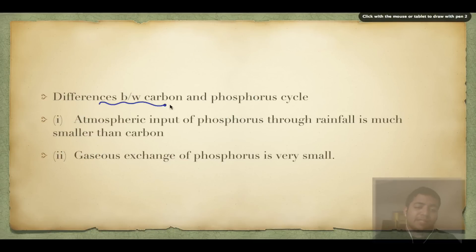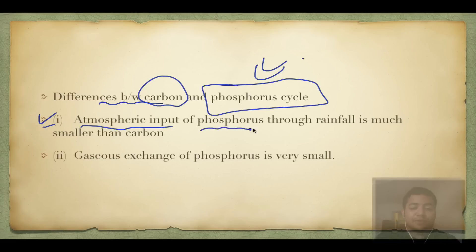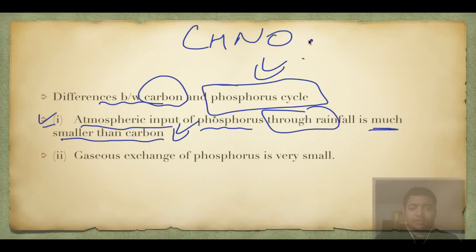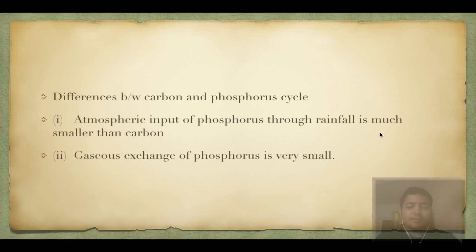The key difference between the carbon cycle and phosphorus cycle: the atmospheric input of phosphorus through rainfall is much smaller than carbon. That is why carbon, hydrogen, nitrogen, and oxygen are called gaseous or atmospheric cycles, while the gaseous exchange of phosphorus is very small. I hope you liked the video.